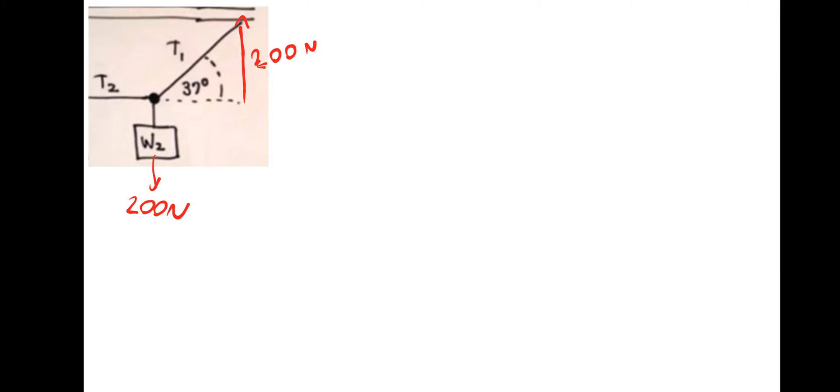So with that information we can then find, let's find T2 first of all. T2 pulling that way would be equal to the horizontal component of T1 pulling in that direction. So we just need to use trigonometry to find T2 and then trigonometry to find T1, which we can do now. So let's label it up. So opposite, adjacent, hypotenuse. So let's find T2 first. So that would be tan 37 is equal to opposite which is 200 divided by the adjacent which is T2.